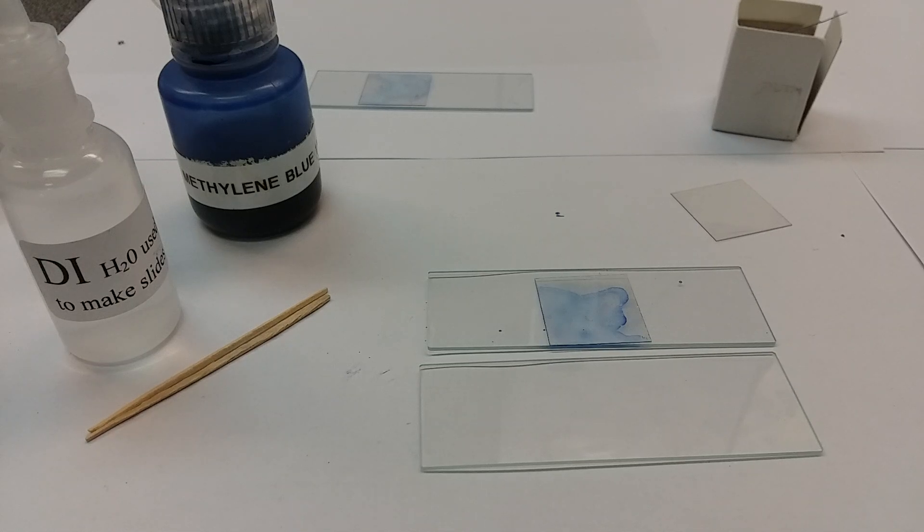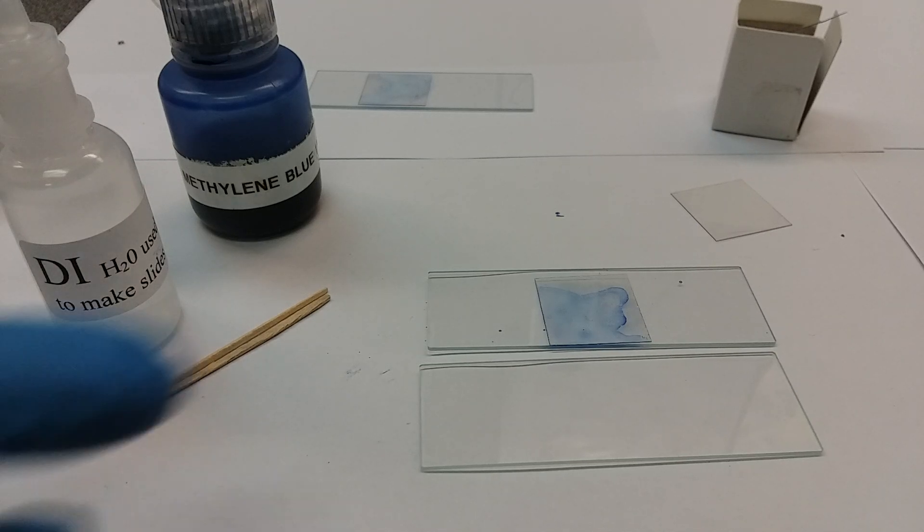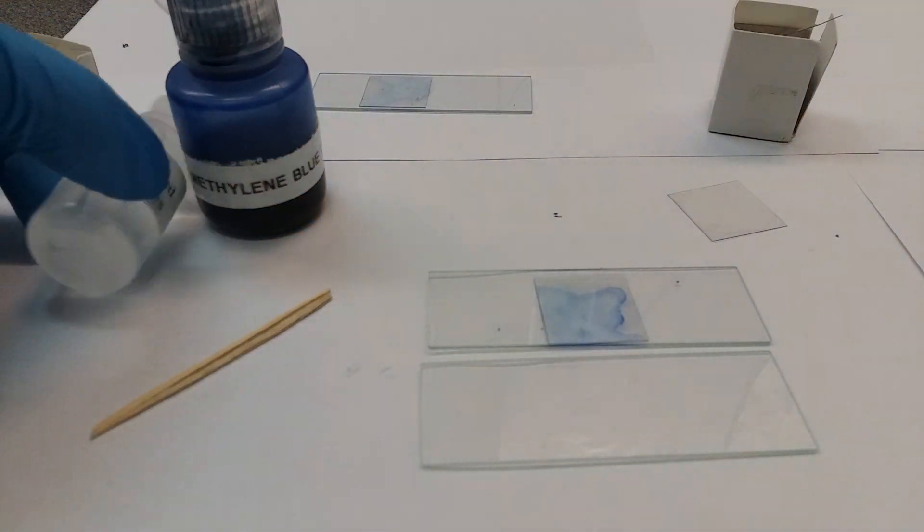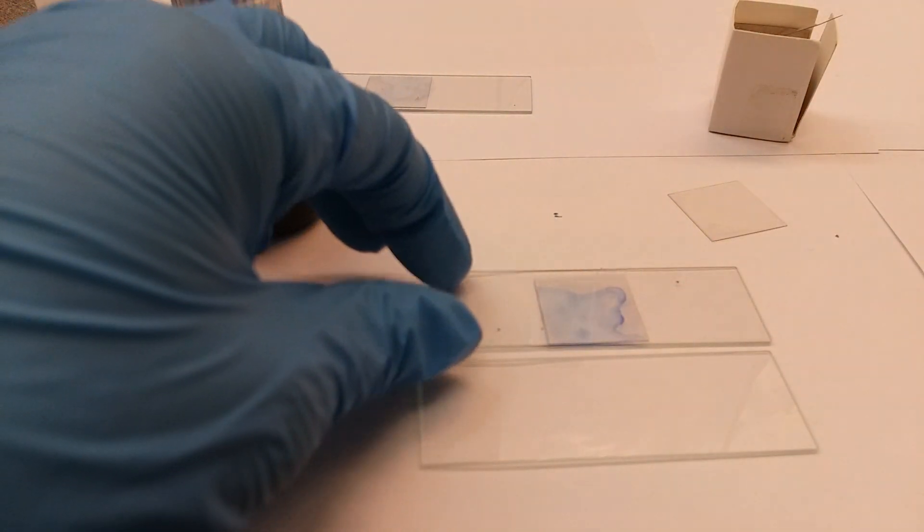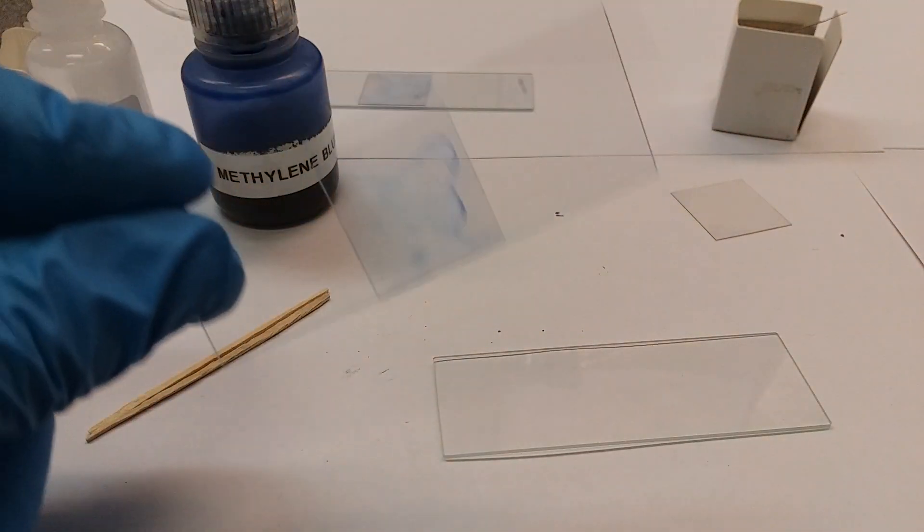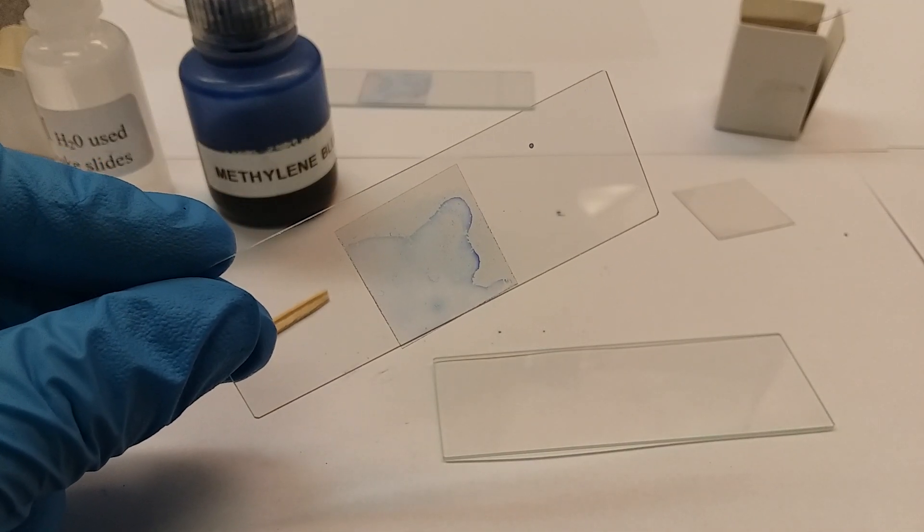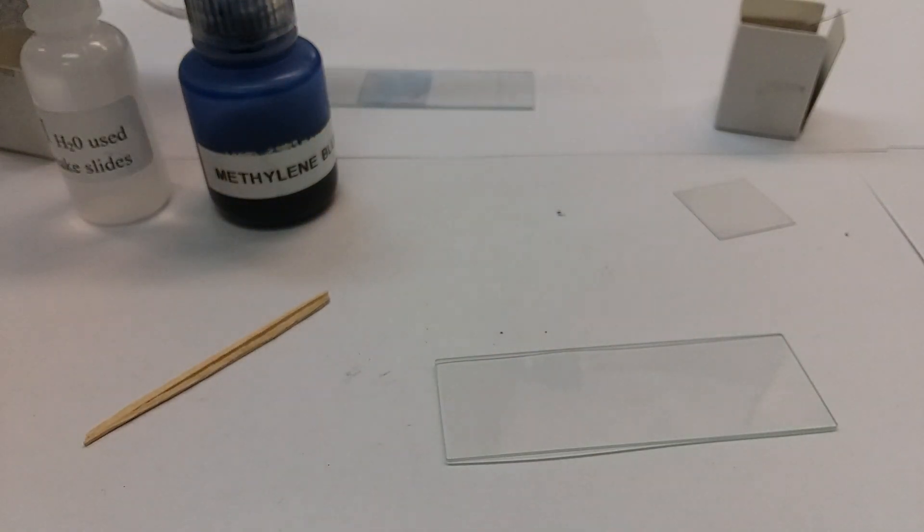Hey guys, this video is on how to make a cheek slide for Lab 7 in the 101 manual. We're trying to make a slide that's going to be stained with methylene blue that's going to have your cheek cells in it. I'm going to lay this over here with the other one I've made.